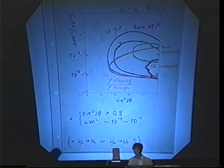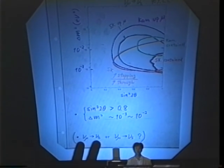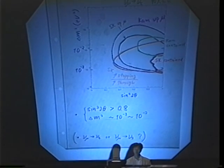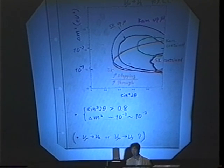And one comment is, of course, so far we assumed that the oscillation is nu-mu to nu-tau. But probably, nu-mu to nu-sterile is almost equally allowed.